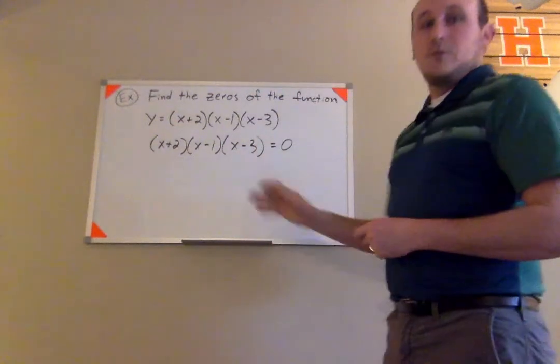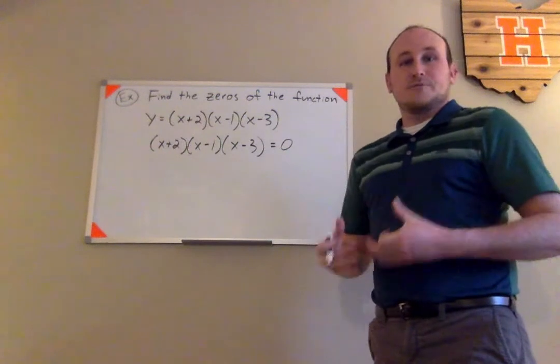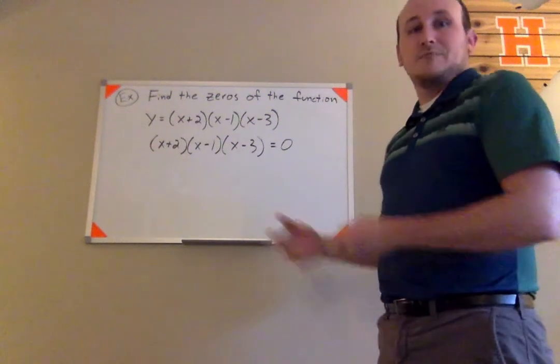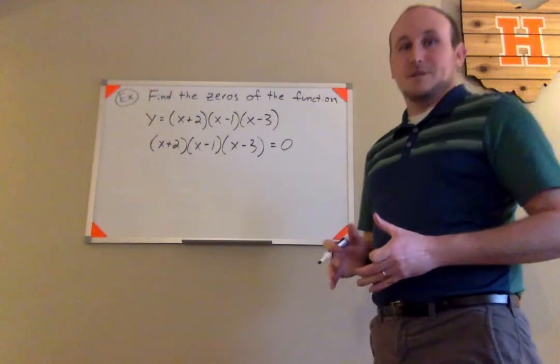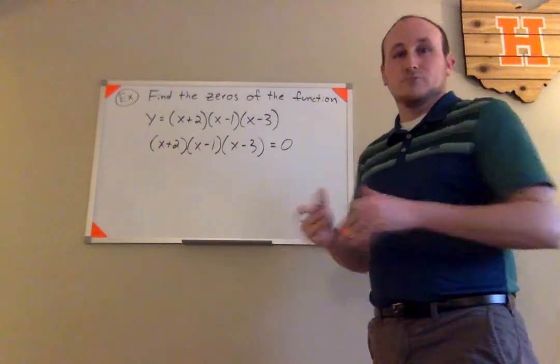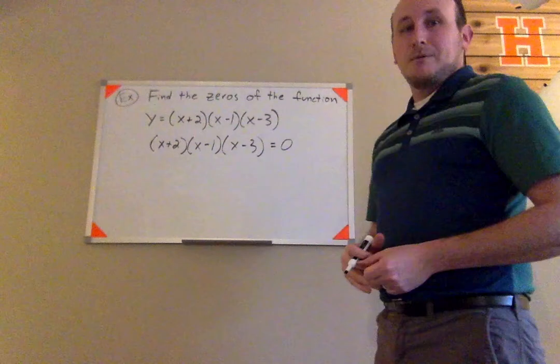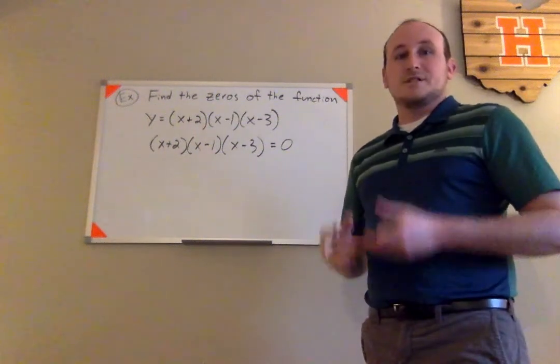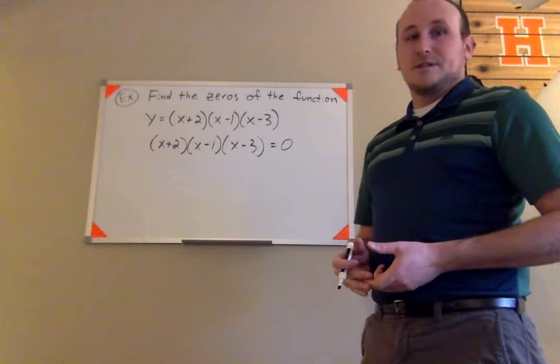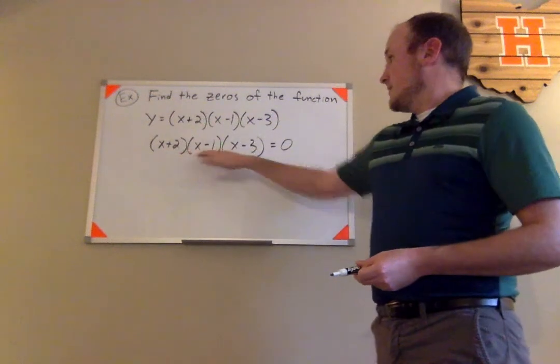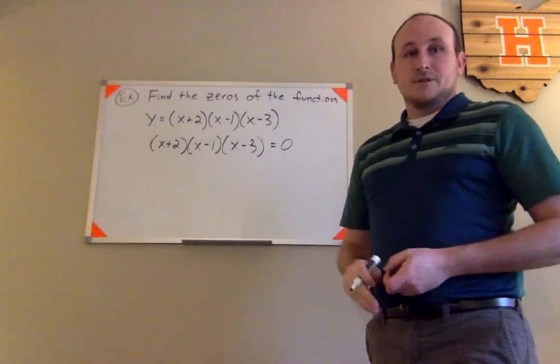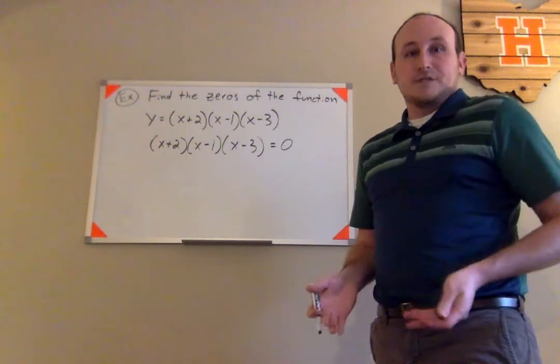Now that we've created this equation, we're looking for the roots of this equation. Those are the values that make this equation true. A slight technical change in the vocabulary that I'm using there from zeros of the function to roots of the equation. But what we're going to do now is we're going to take advantage of the zero product property. The zero product property says that if this product of these three binomials is going to equal zero, then one or more of them must equal zero.